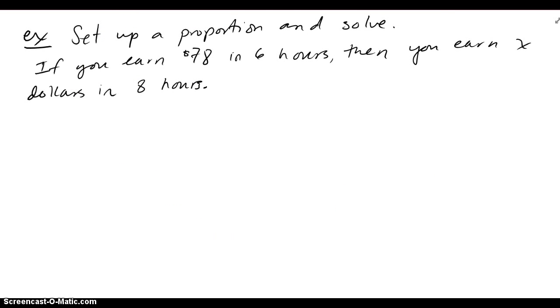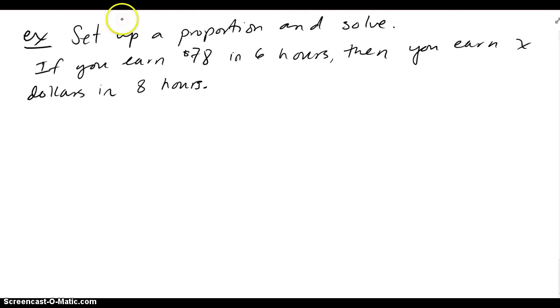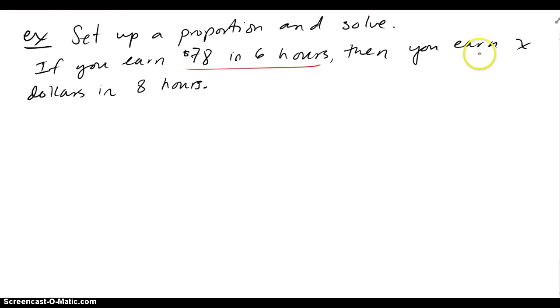Let's set up a proportion and solve this example. It says if you earn $78 in 6 hours, then you earn X dollars in 8 hours. So we're going to set up a proportion as we read the problem. There are different ways to set them up, but reading it, I see that $78 corresponds to 6 hours. So I have basically dollars over hours, and I want to keep that consistent when I set up my proportion.